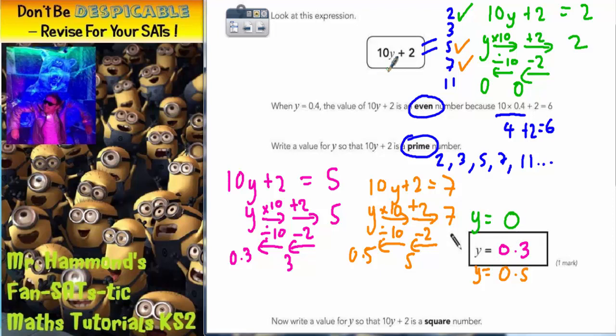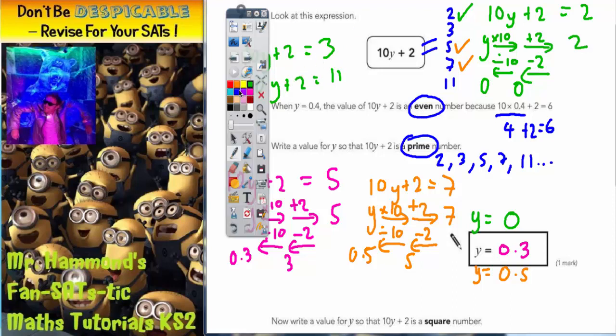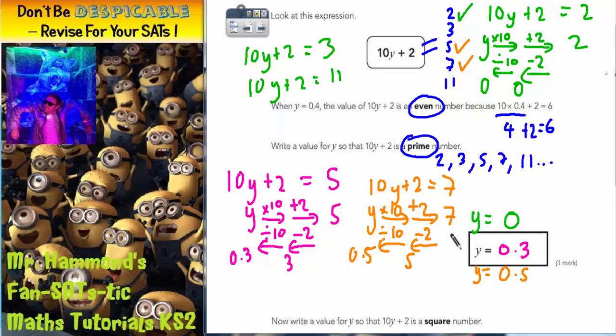10 zeros would be 0. Add 2 would be 2. And that would have given a prime number. So any of these answers are acceptable. If you want to you can also try it with 10y plus 2 being equal to 3. And you could also try 10y plus 2 being equal to 11. Go on, see what you get. Right, let's scroll down and have a look at the second part of the question.